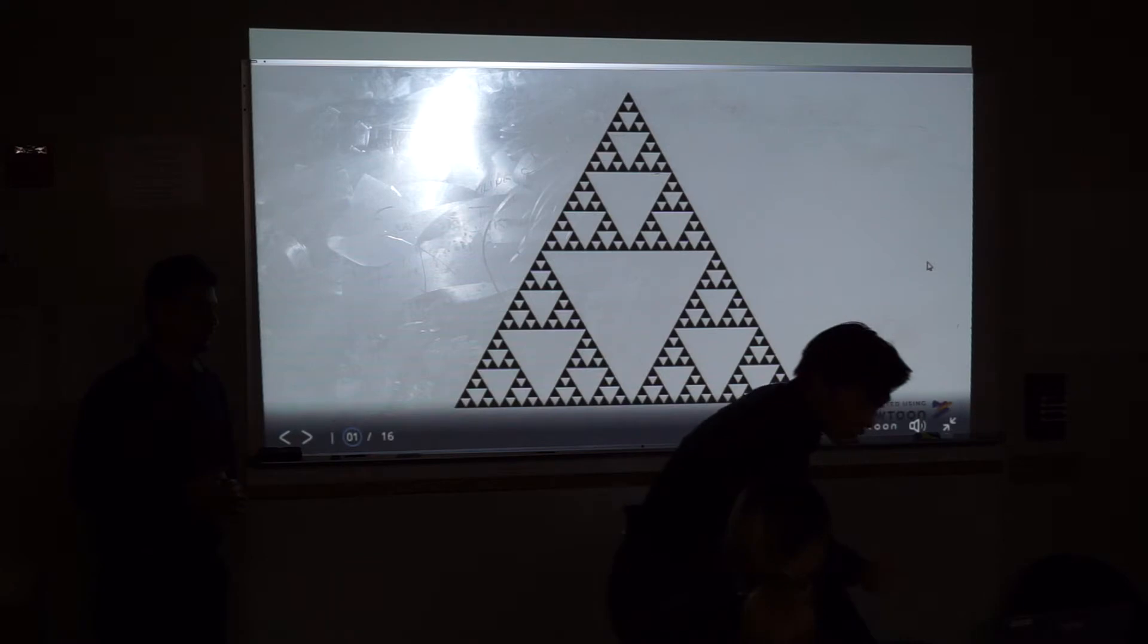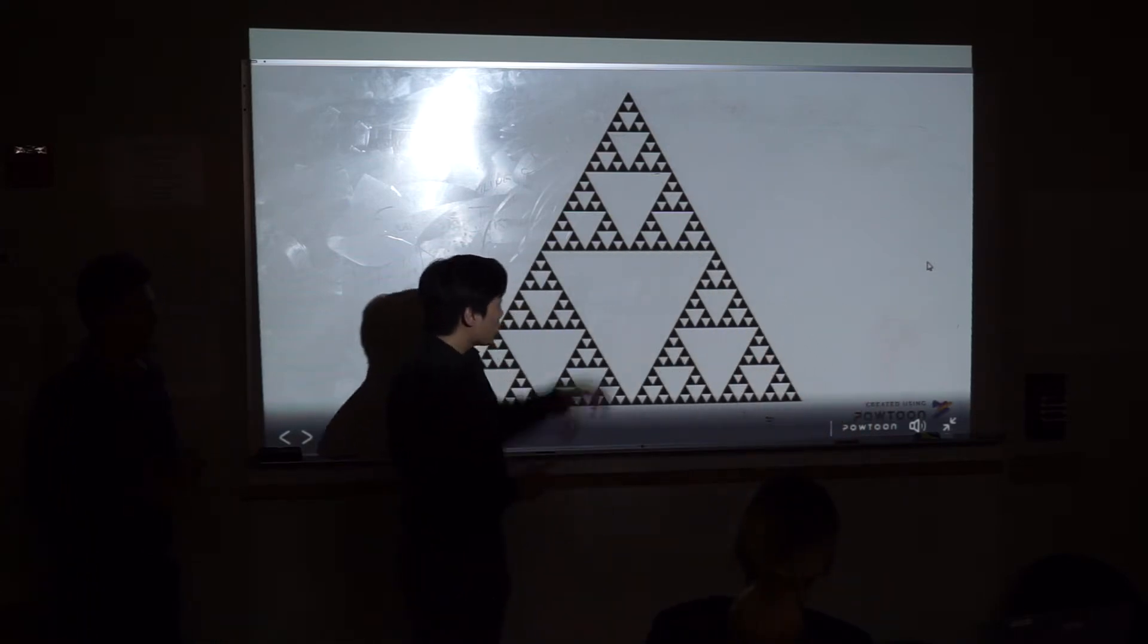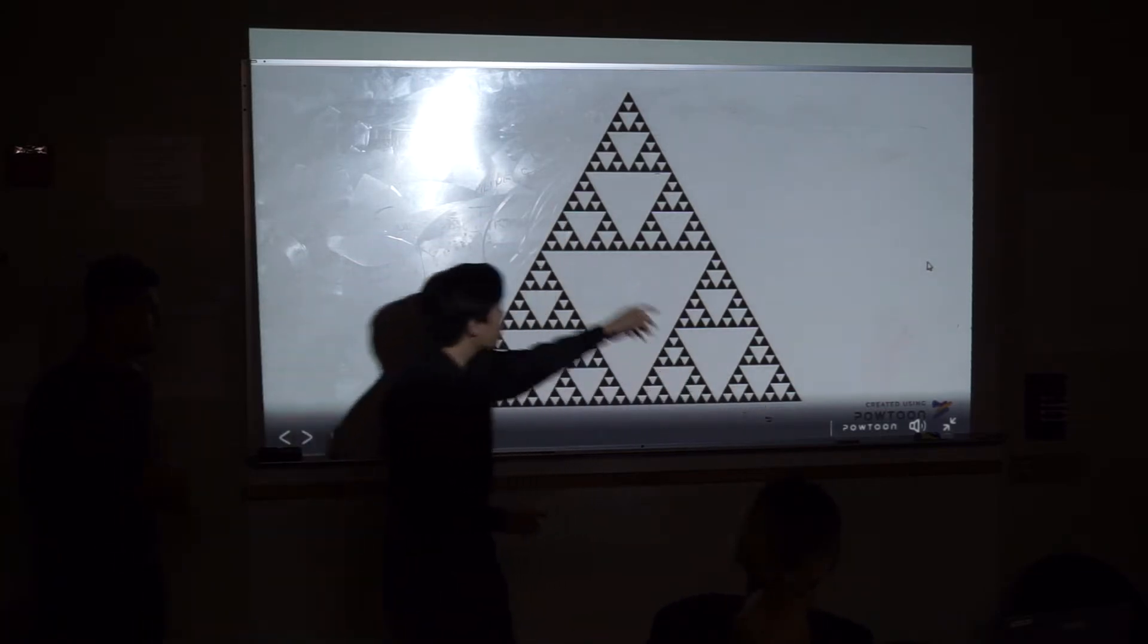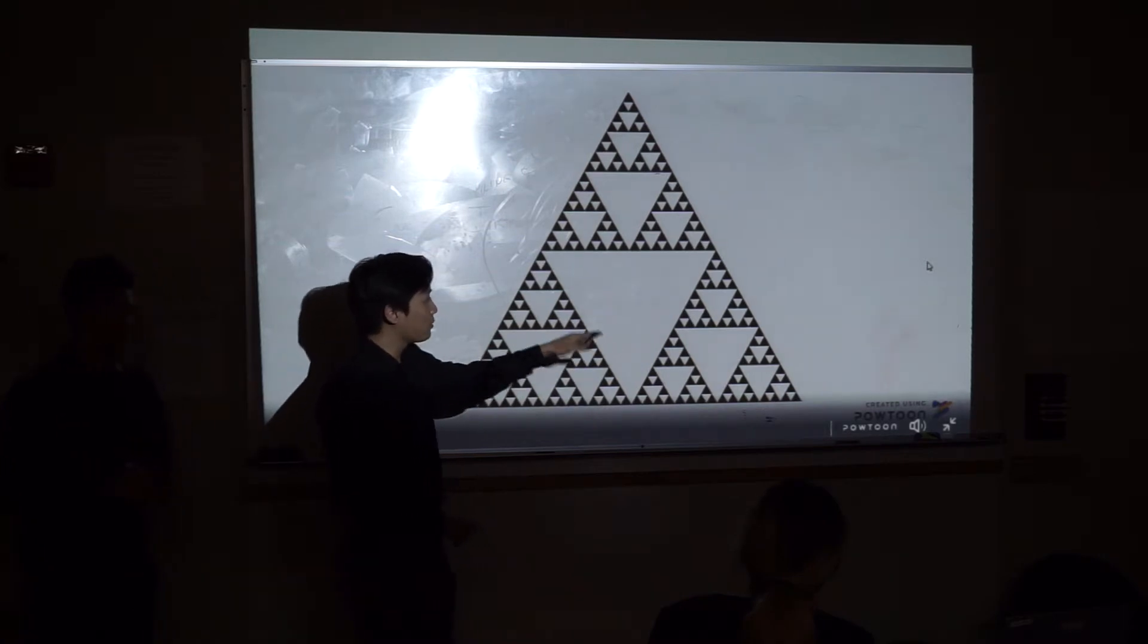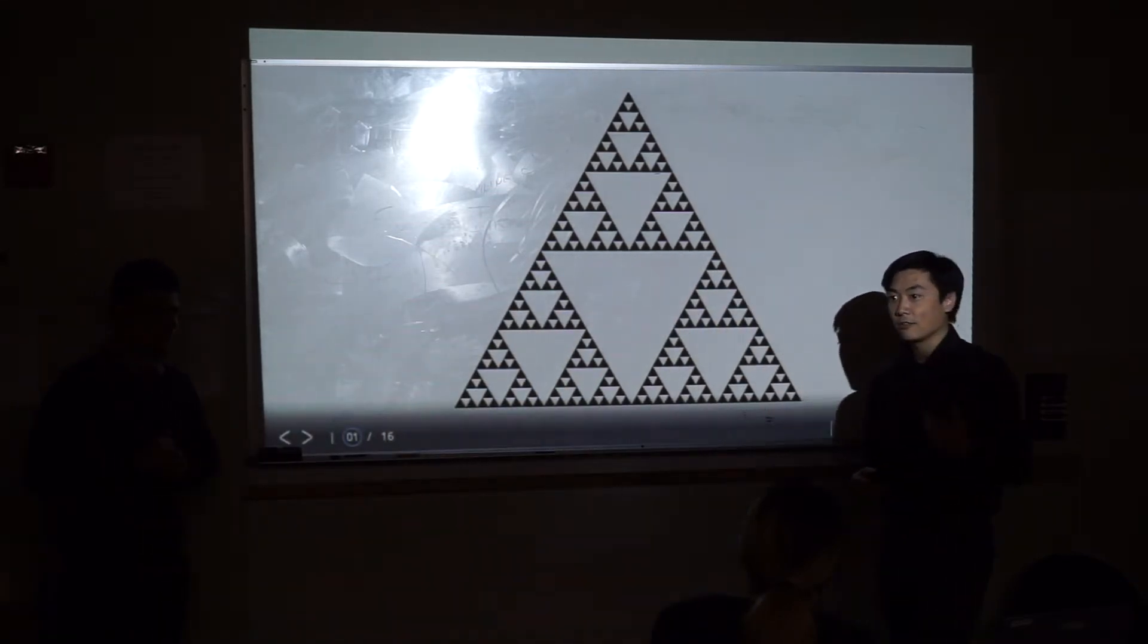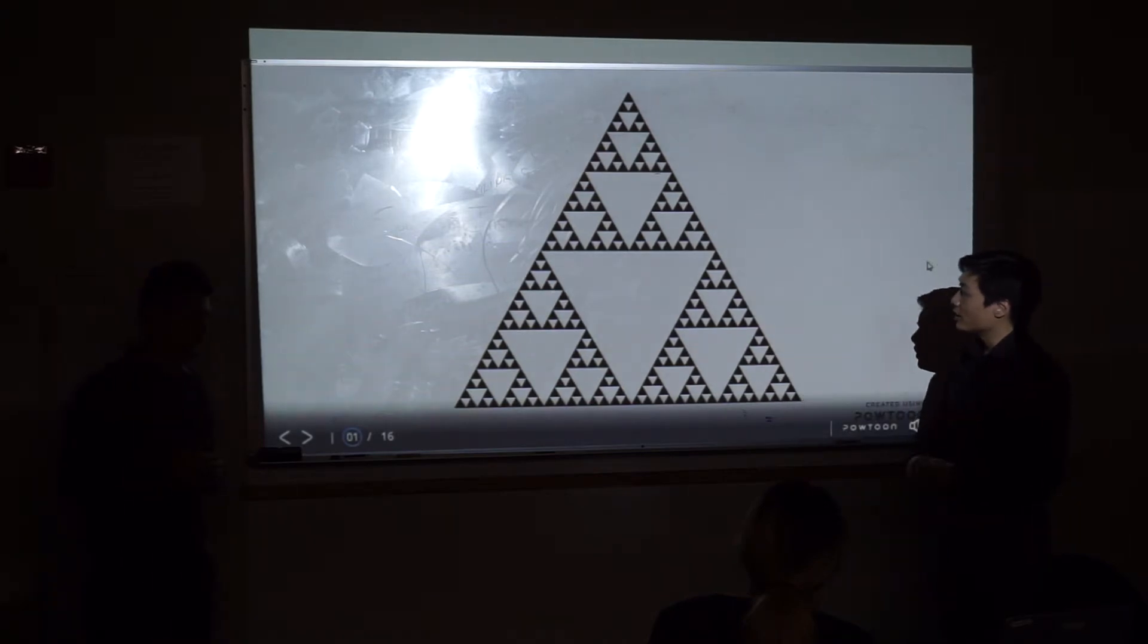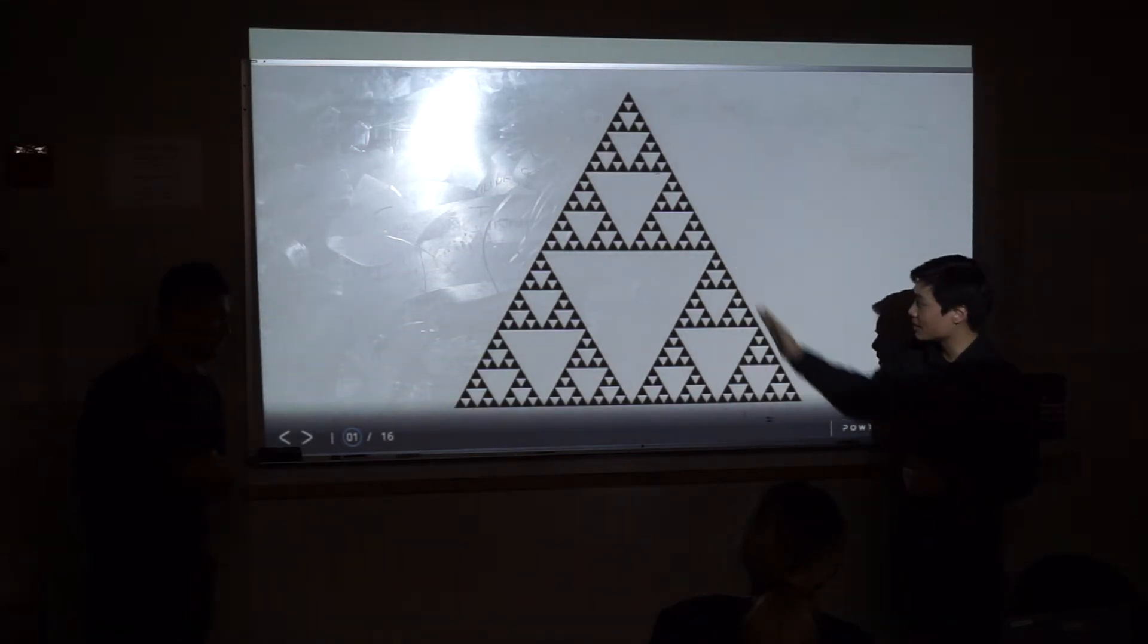And right here you can see the Sierpinsky triangle which is basically a big equilateral triangle. And inside the equilateral triangle is multiple small copies. And what we call this is self-similarity. So self-similarity is one of the two important properties of fractals. Self-similarity is basically iteration. So iteration means a shape is going to be formed and it's going to be small copies of itself that is made up of that big shape.